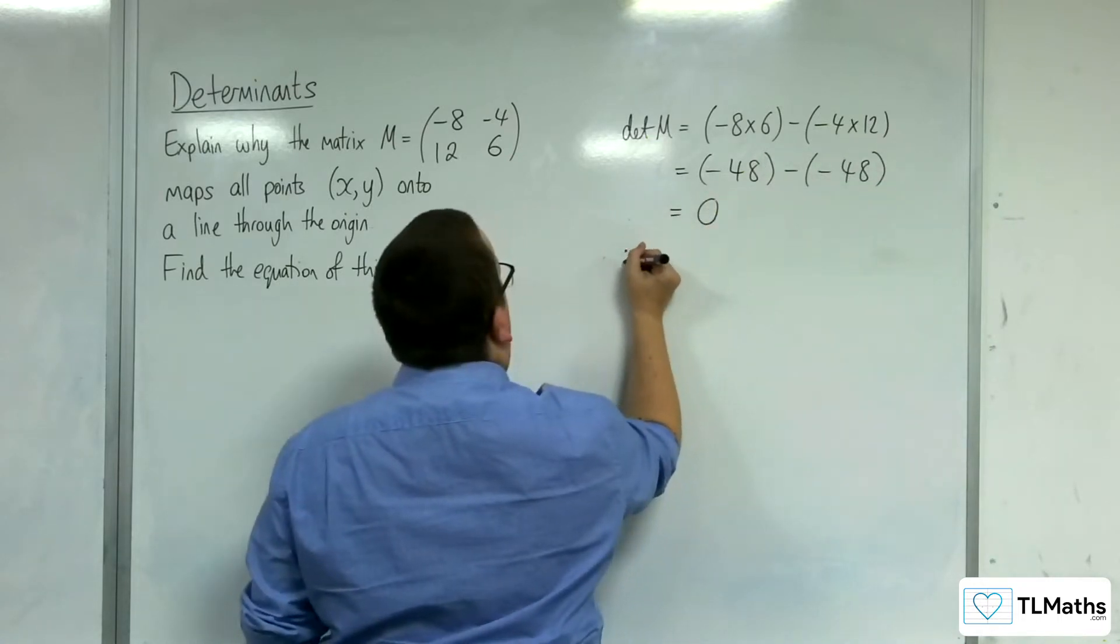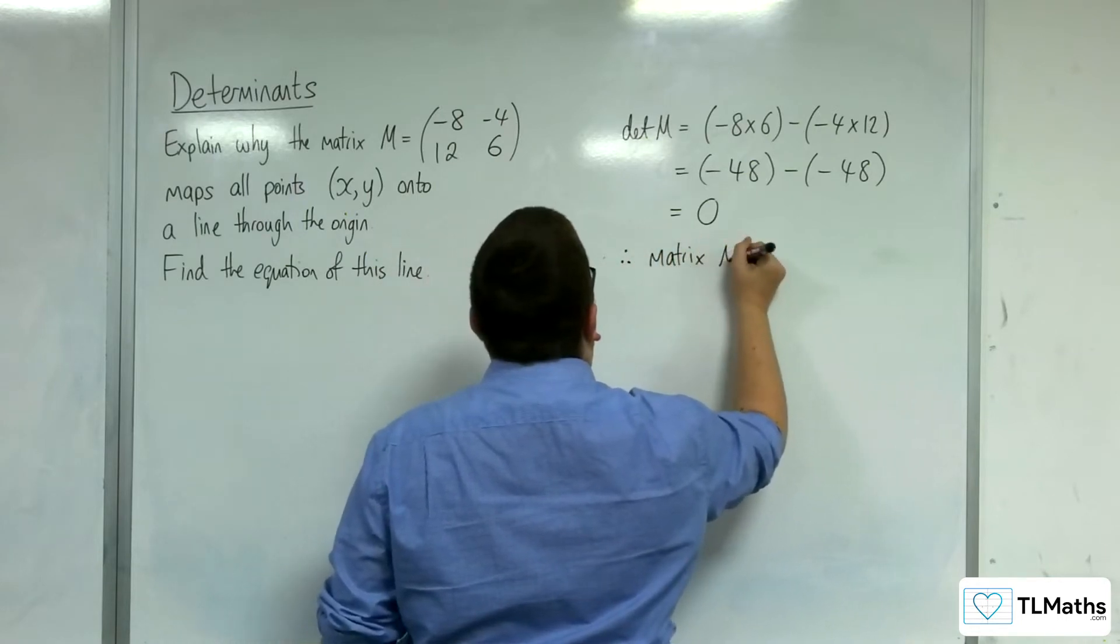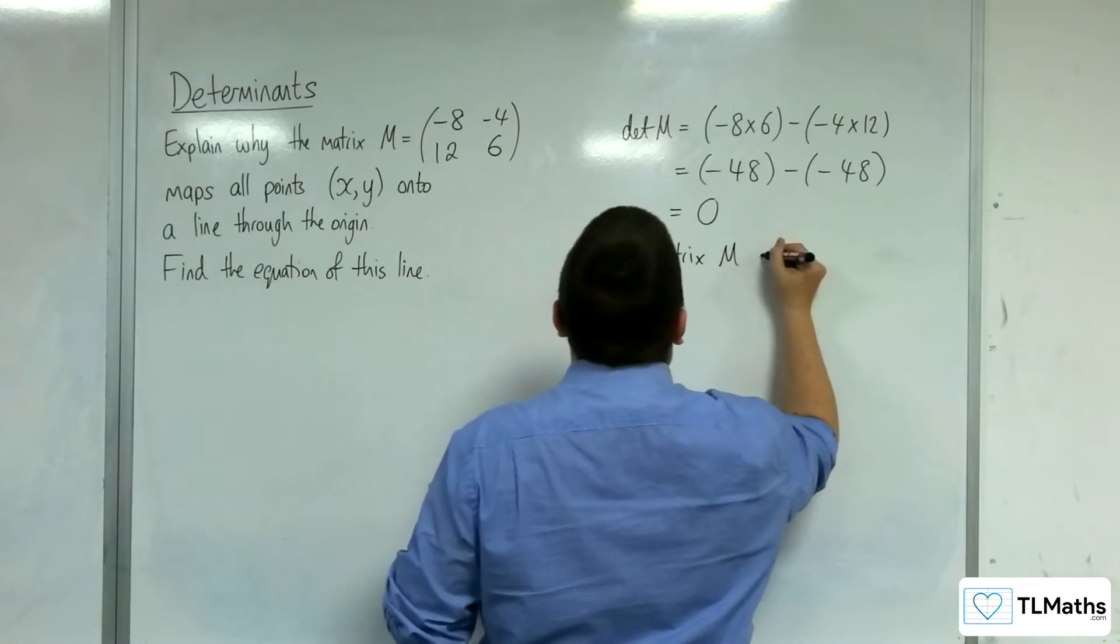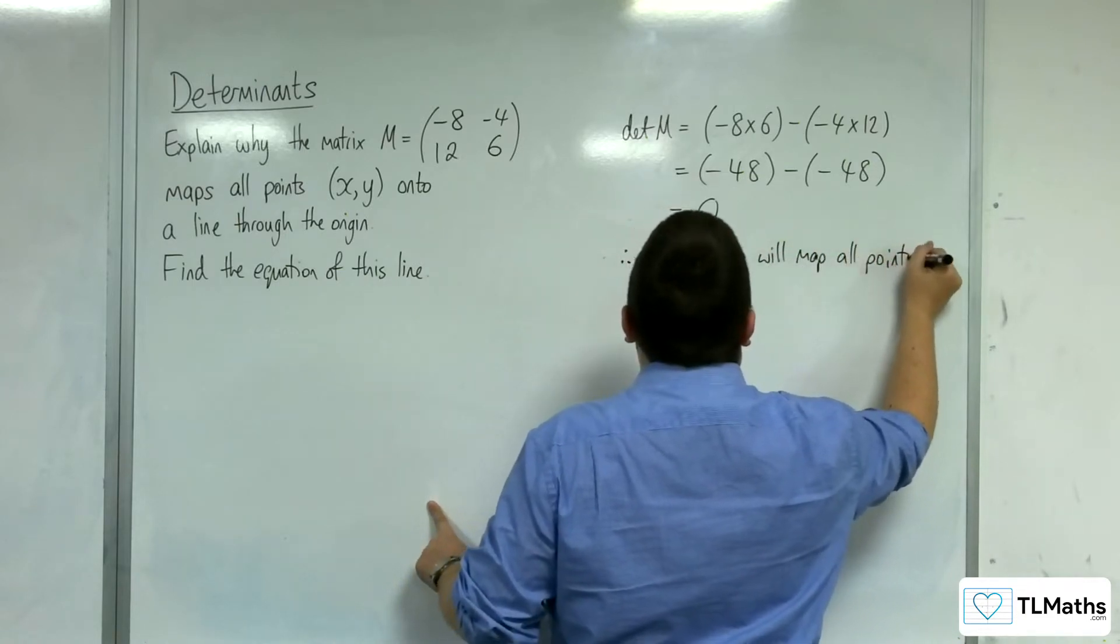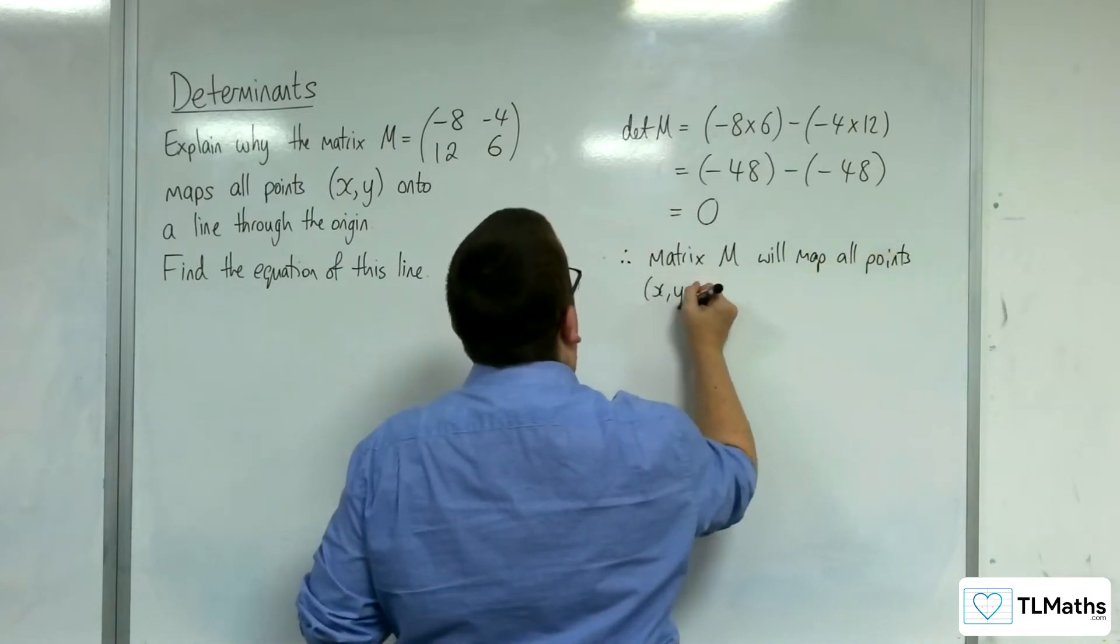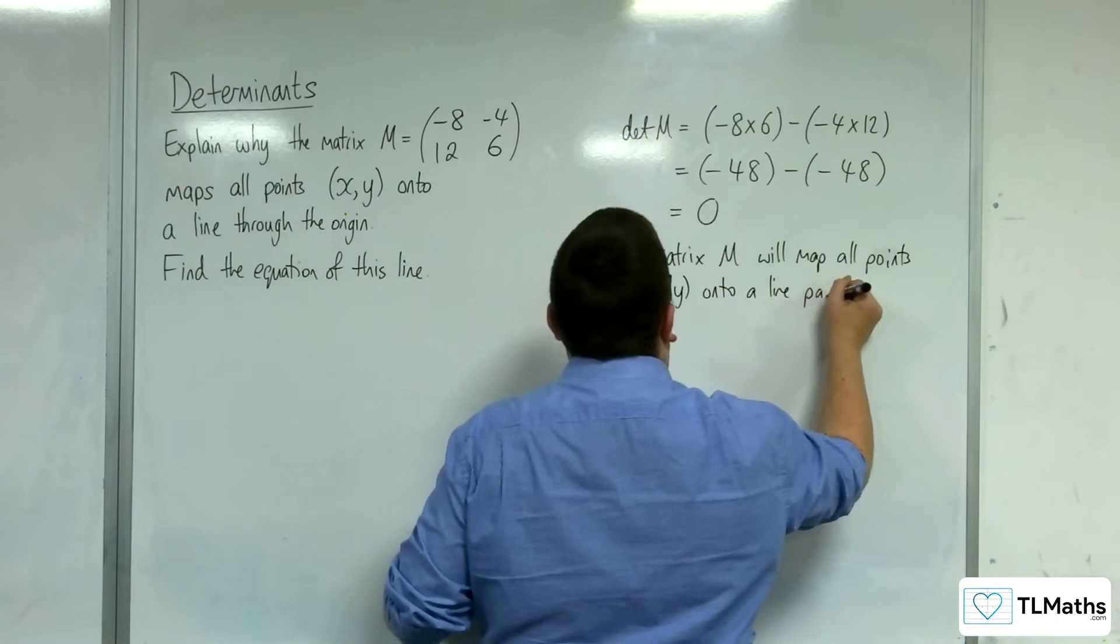which is 0. Therefore, matrix M will map all points x, y onto a line passing through the origin.